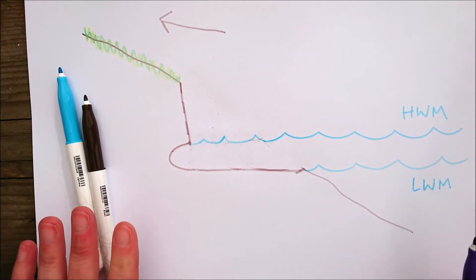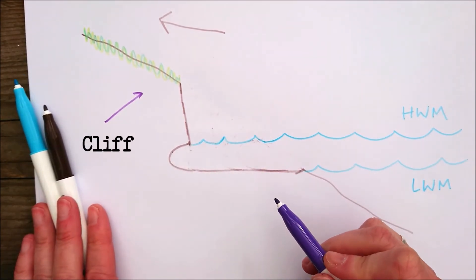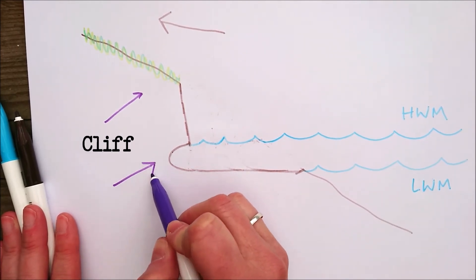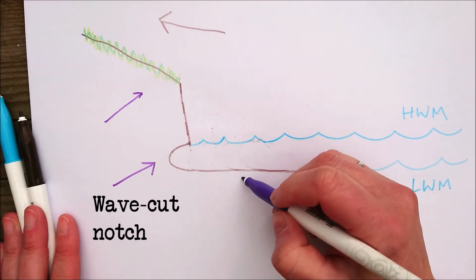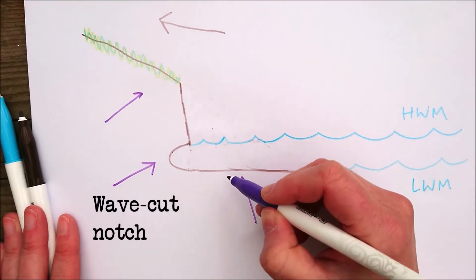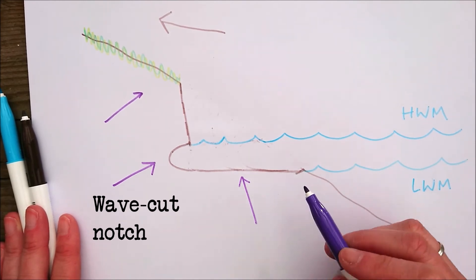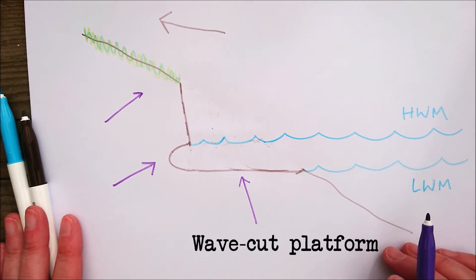Now what you're left with here is the cliff which is here. You often see a wave cut notch which is here. And this here, this area that hasn't been able to erode because it's really at low watermark, it's called the wave cut platform. And that is all there is to the formation of cliffs.